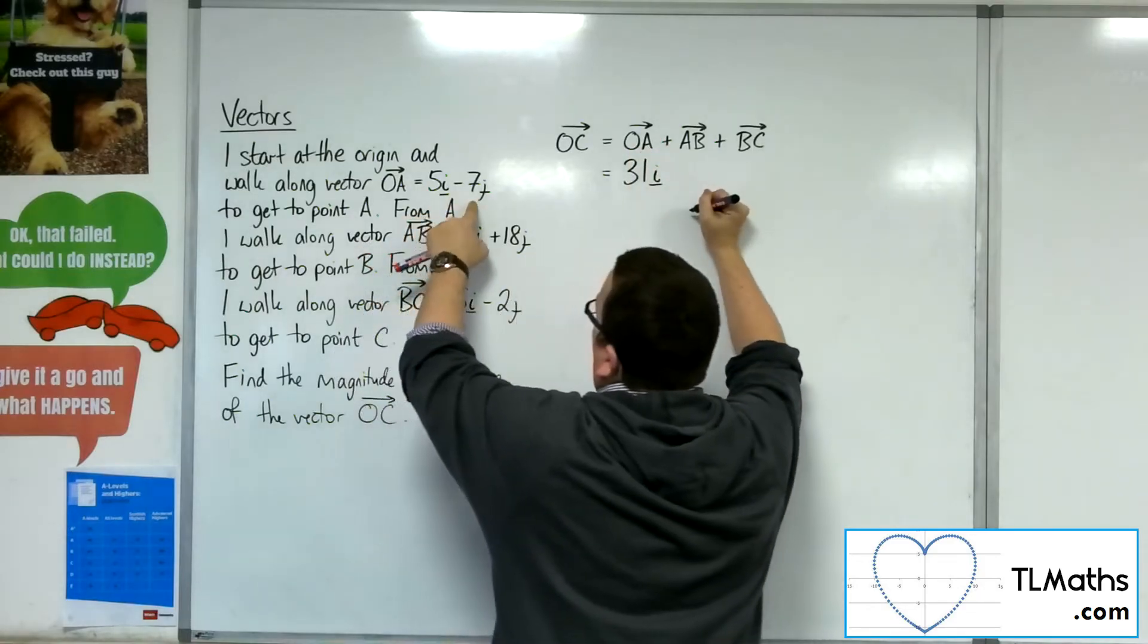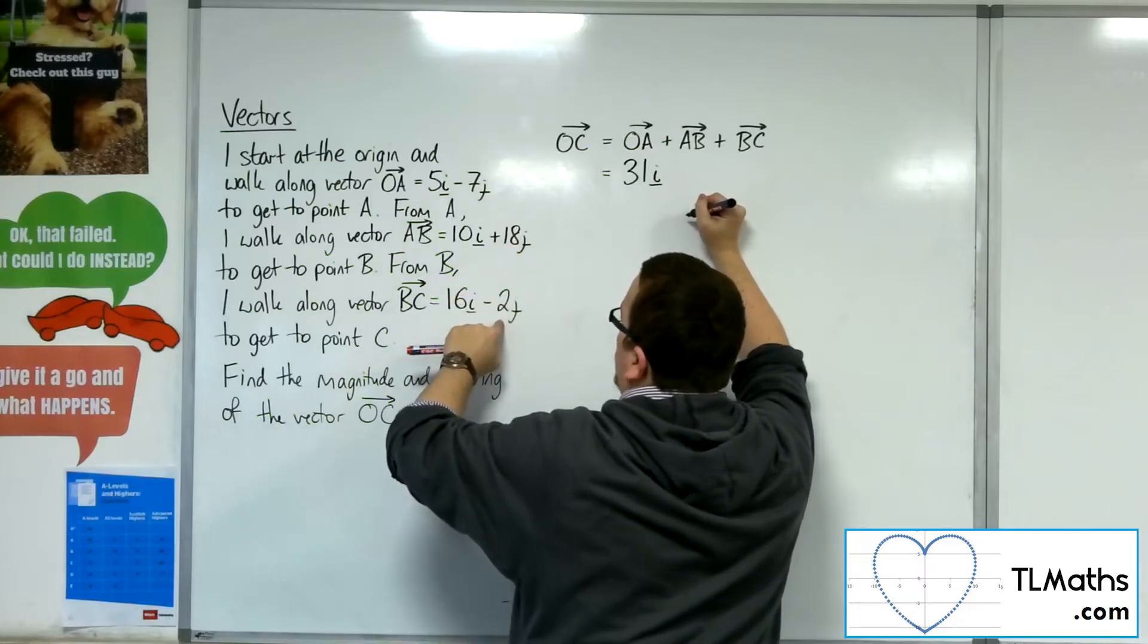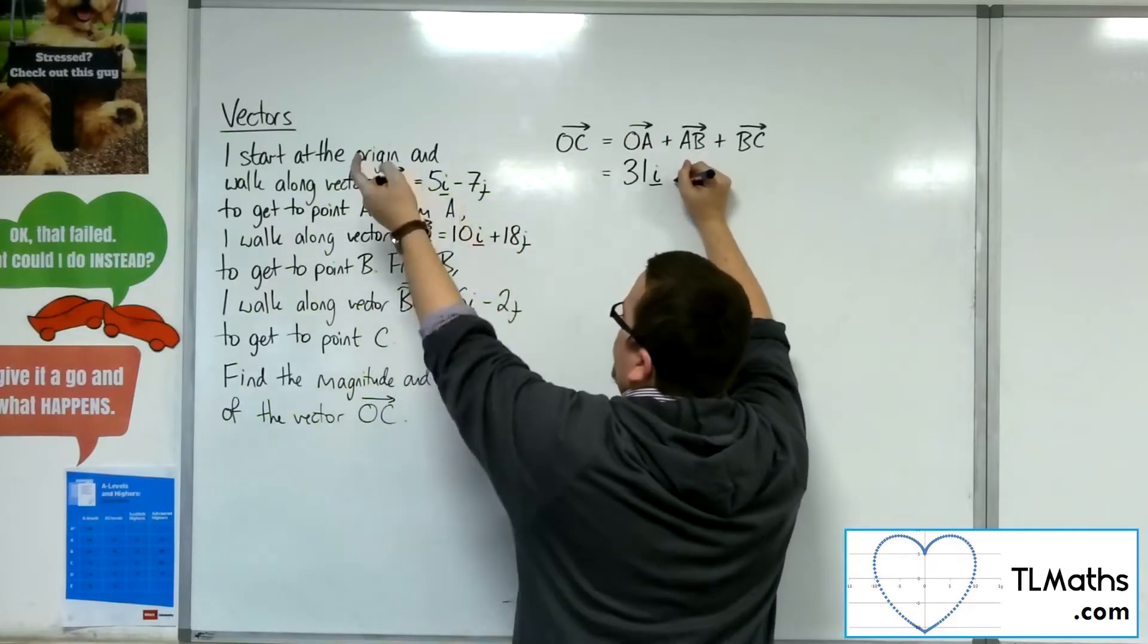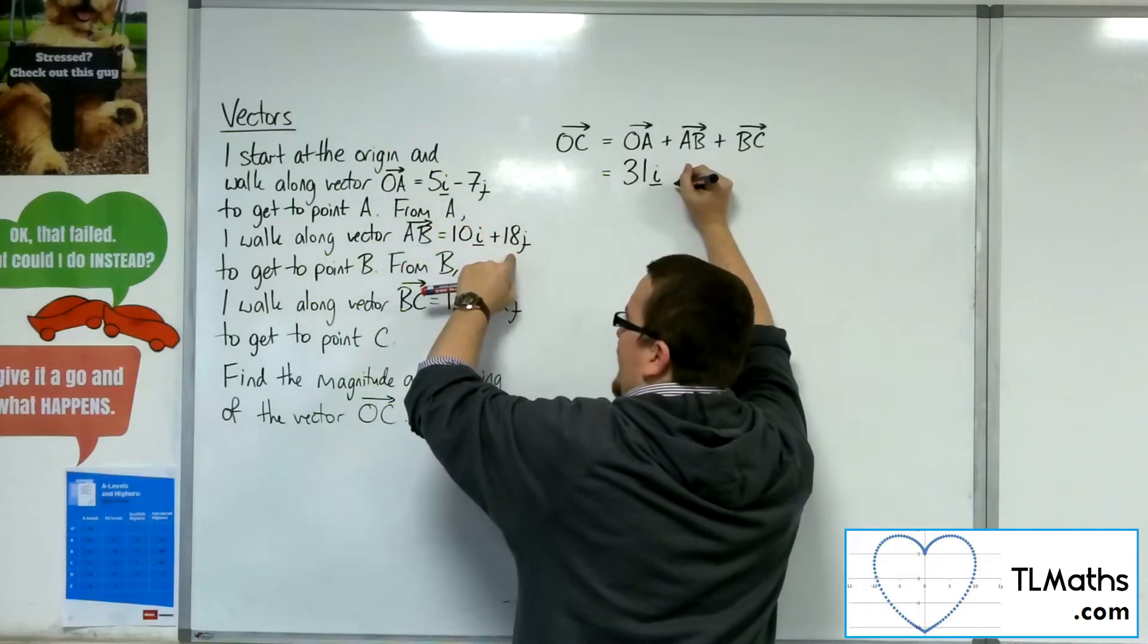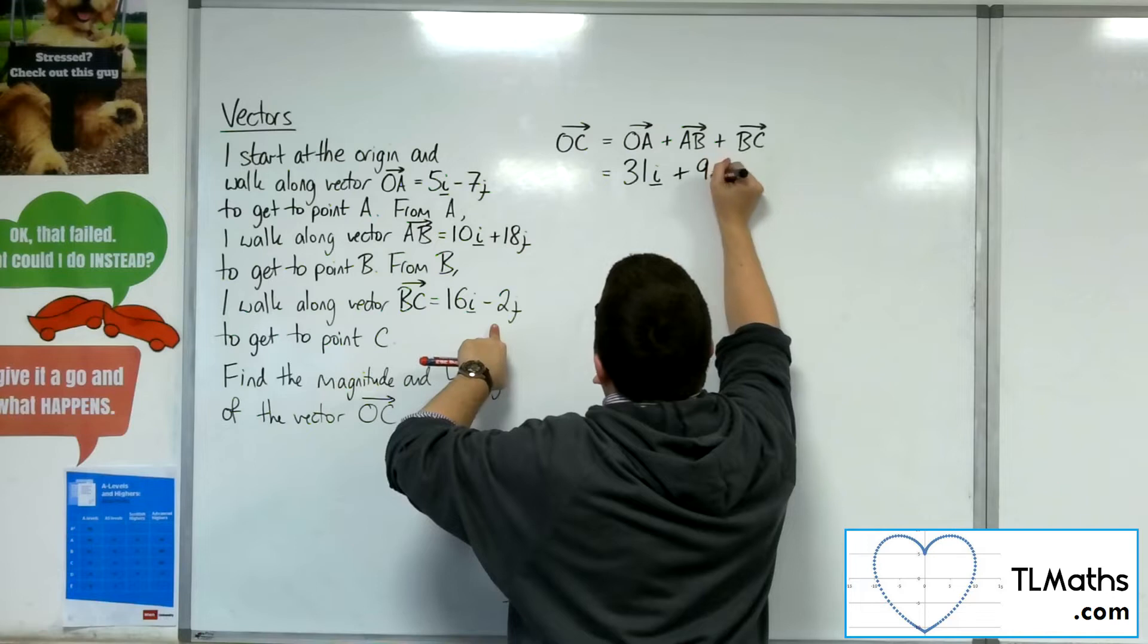Minus 7 plus 18, so 11, take away 2, so minus 7 plus 18 is 11, take away 2 is 9. So 9j.